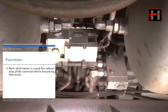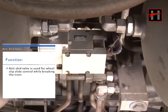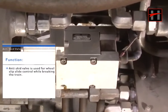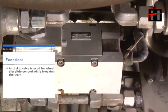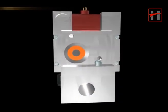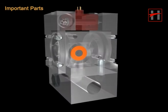The anti-skid valve is used for wheel slip slide control while braking the train. The important parts of the anti-skid valve are: